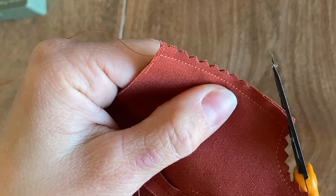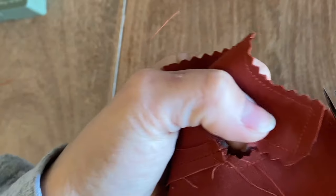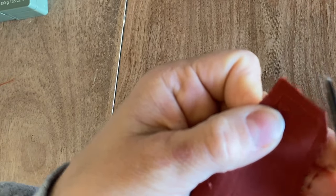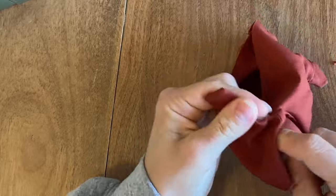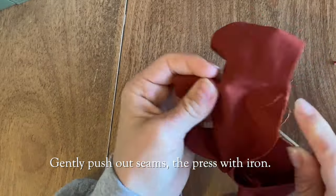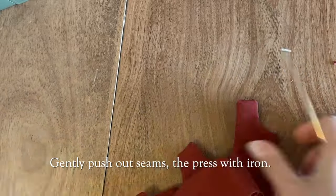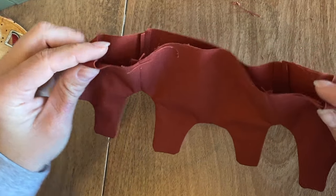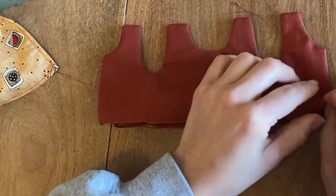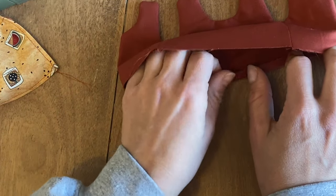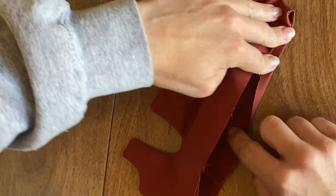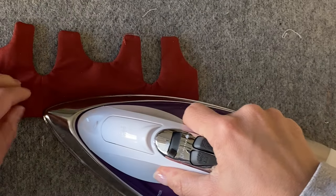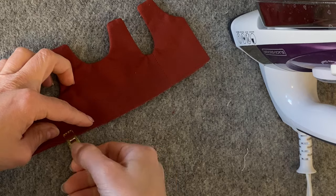And then be sure to carefully trim your corners so that it's not so bulky when we're going to turn this inside out. Now I'm going to take my bodice piece and I'm going to turn it in at the raw edges, and I'm going to go all the way around. I'm going to press this down with iron. I'm just going to pin these in place.